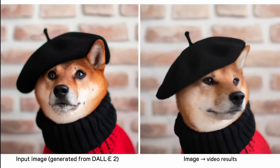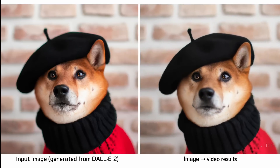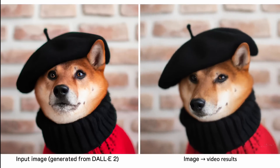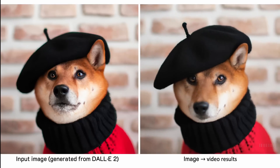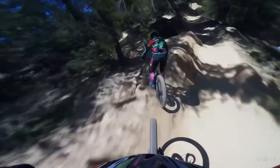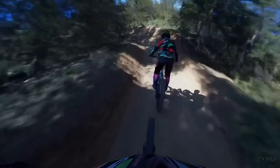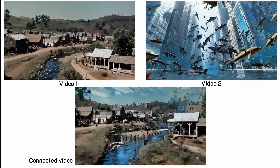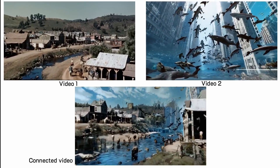Aside from text-to-video generation, Sora can also animate static images, create perfectly looping video, and smoothly interpolate between two input videos.